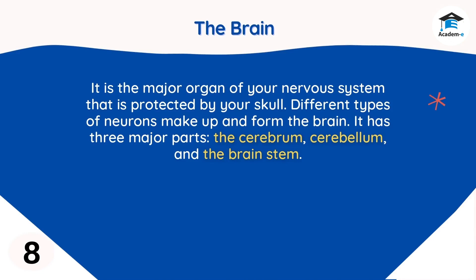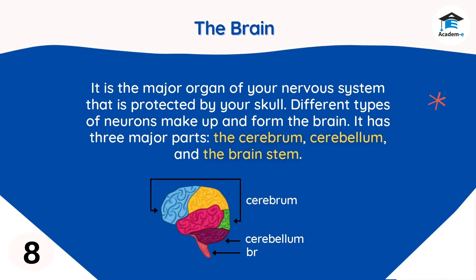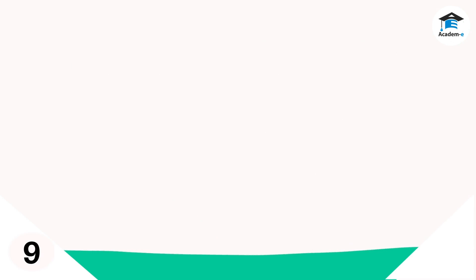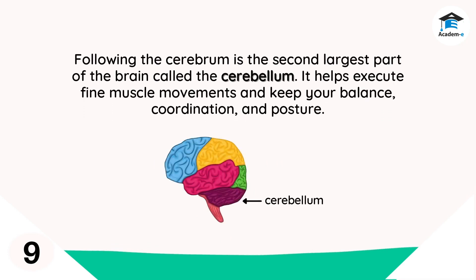Different types of neurons make up and form the brain. It has three major parts: the cerebrum, cerebellum, and the brainstem. The cerebrum handles your thinking and learning processes like memorizing a poem, learning a new language, solving a math problem, and applying reasoning. It also processes messages coming from your sense organs. The cerebellum is the second largest part of the brain; it helps execute fine muscle movements and keeps your balance, coordination, and posture.